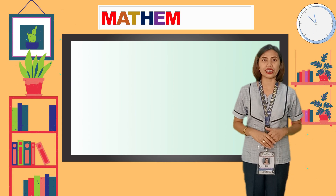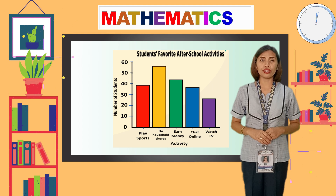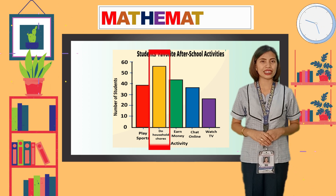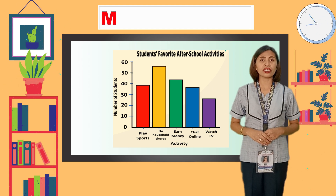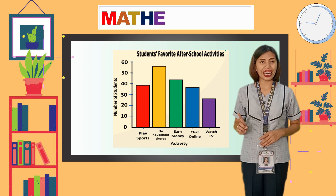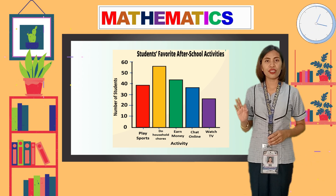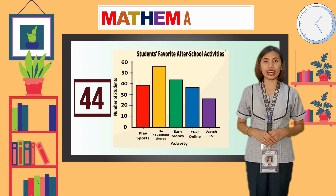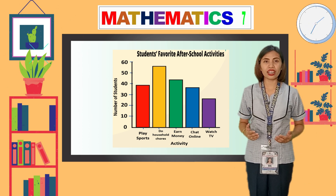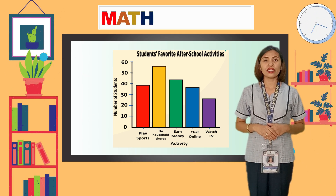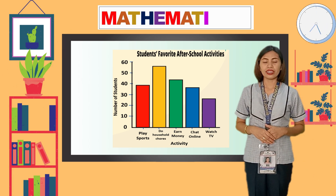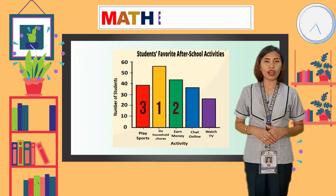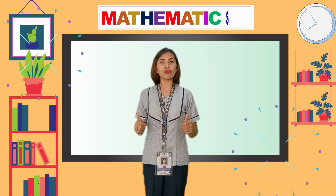Let us answer the following questions. Most of the students do household chores, which is the activity they like most. The least liked activity is watch TV. There are 44 students who like to earn money. Listing the categories from greatest to least: number one is do household chores, number two is earn money, number three is play sports, fourth is chat online, and lastly is watch TV.